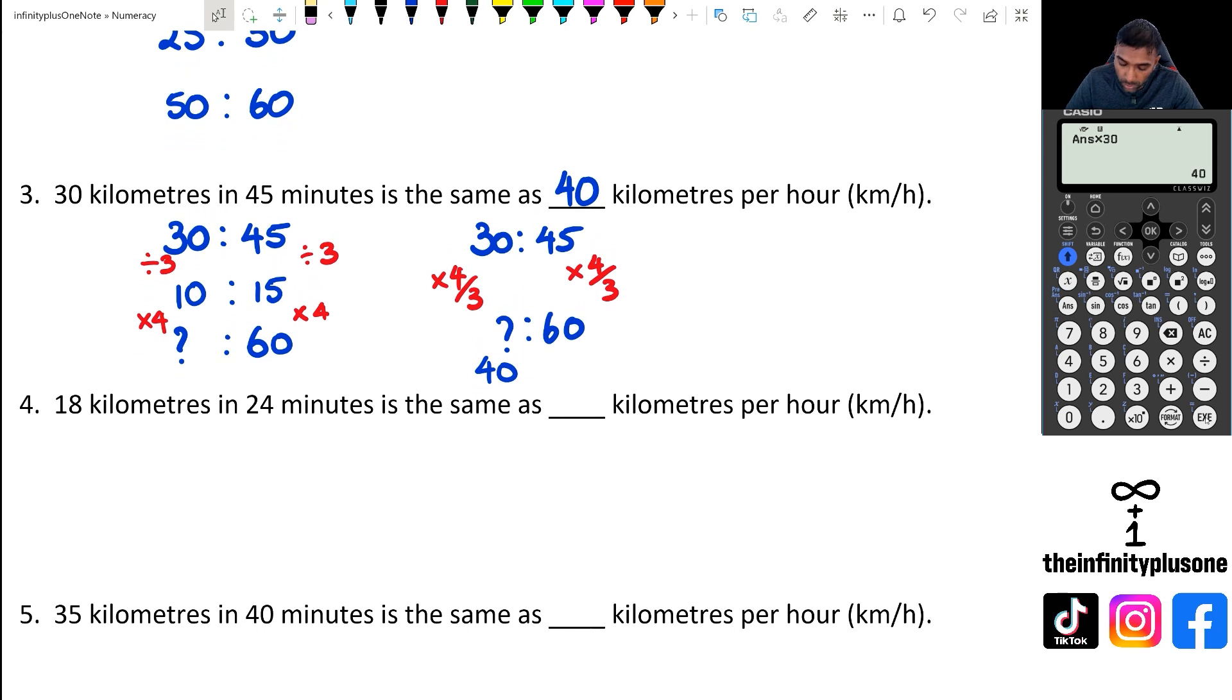Alright, so let's have a look at question four. Question four, we've got 18 kilometers in 24 minutes. And once again, we want to figure out what is it going to be for 60 minutes. So we're going to do 60 divided by 24 first, because that's going to give us a coefficient that we can multiply by. And in this case, it's five over two. And as a decimal, it's going to be 2.5. So 24 times 2.5 is 60. 18 times 2.5 is going to give us the answer we're looking for.